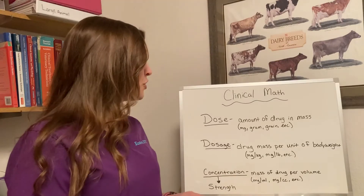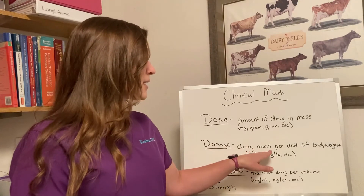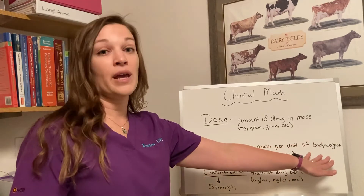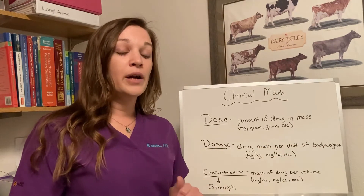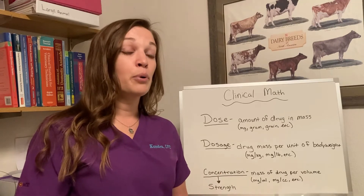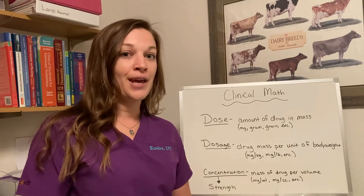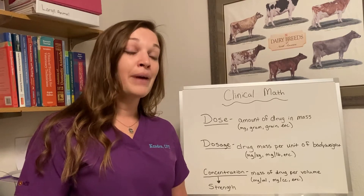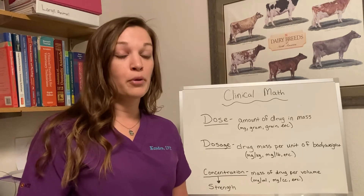Definition two is dosage. This is drug mass per unit of body weight of your patient. This is where we're going to run into labels like milligrams per kilogram, mg/kg, or milligrams per pound.